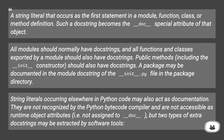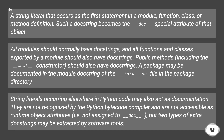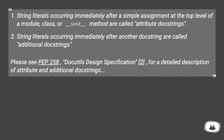A package may be documented in the module doc string of the __init__.py file in the package directory. String literals occurring elsewhere in Python code may also act as documentation. They are not recognized by the Python bytecode compiler and are not accessible as runtime object attributes (i.e., not assigned to __doc__), but two types of extra doc strings may be extracted by software tools. String literals occurring immediately after a simple assignment at the top level of a module, class, or __init__ method are called attribute doc strings. String literals occurring immediately after another doc string are called additional doc strings. Please see PEP 258, the Docutils Design Specification, for a detailed description of attribute and additional doc strings.